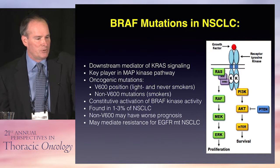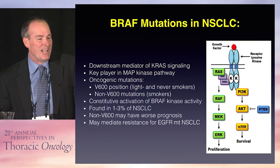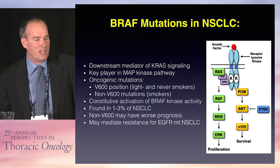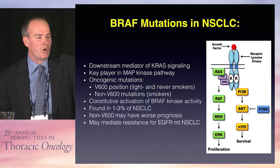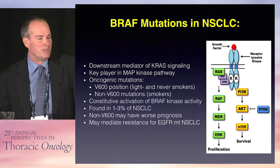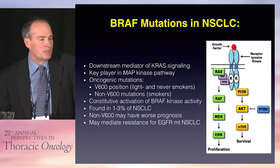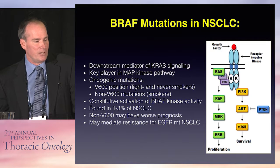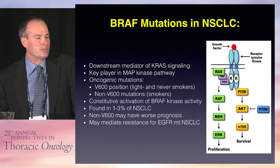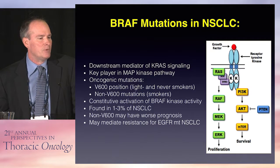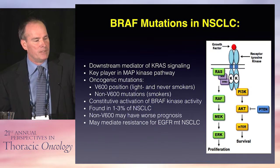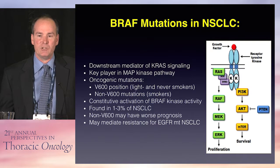BRAF is a downstream mediator of KRAS signaling and a key component of the MAP kinase pathway. Oncogenic mutations have been well described in other tumor types. The V600 mutation is the most common — specifically V600E — commonly seen in light smokers and never-smokers. Non-V600 mutations in BRAF are seen more commonly in smokers. These mutations cause constitutive activation of BRAF kinase activity and downstream signaling. It's a rare mutation found in 1-3% of non-small cell lung cancers. The non-V600 mutations may have a worse prognosis, and BRAF mutations may also mediate resistance in EGFR-mutated cancers.